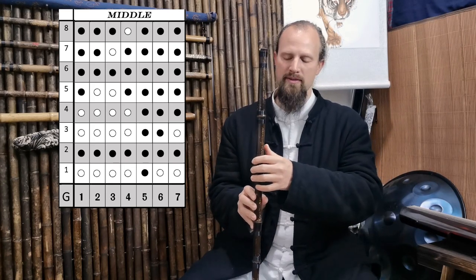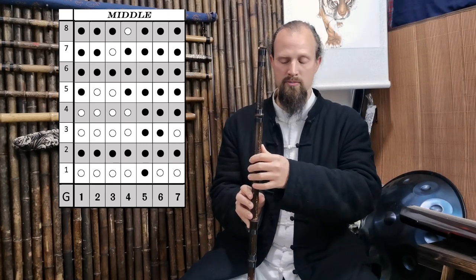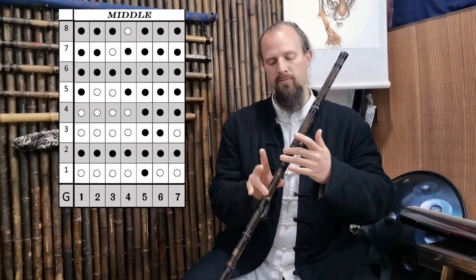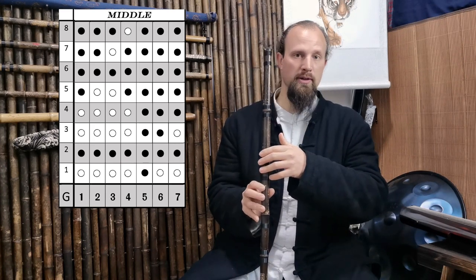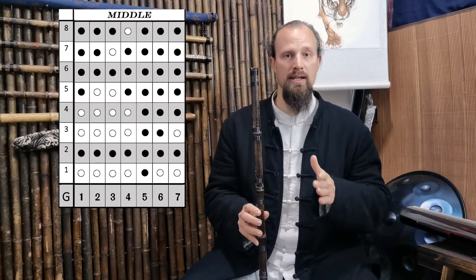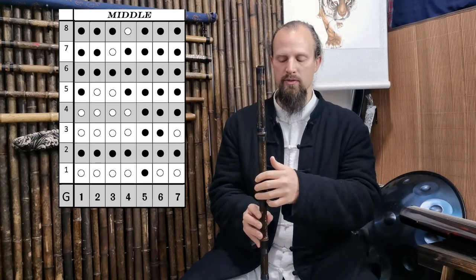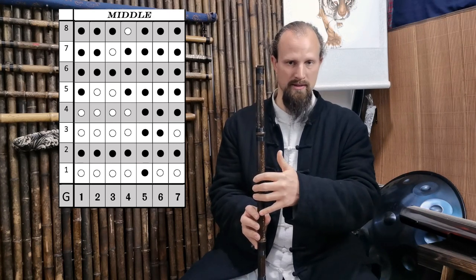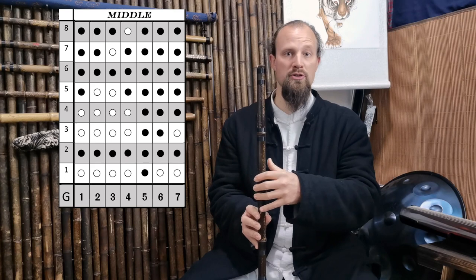A variation on 5 is you can cover the thumb hole but you can also leave it open. I tend to leave it open when I'm going from 4 to 5 just because it's a little bit quicker and it's easier to make sure that you stay in the middle register. But covering that back hole for middle register 5 is going to be the same thing. So either way you can try that out.